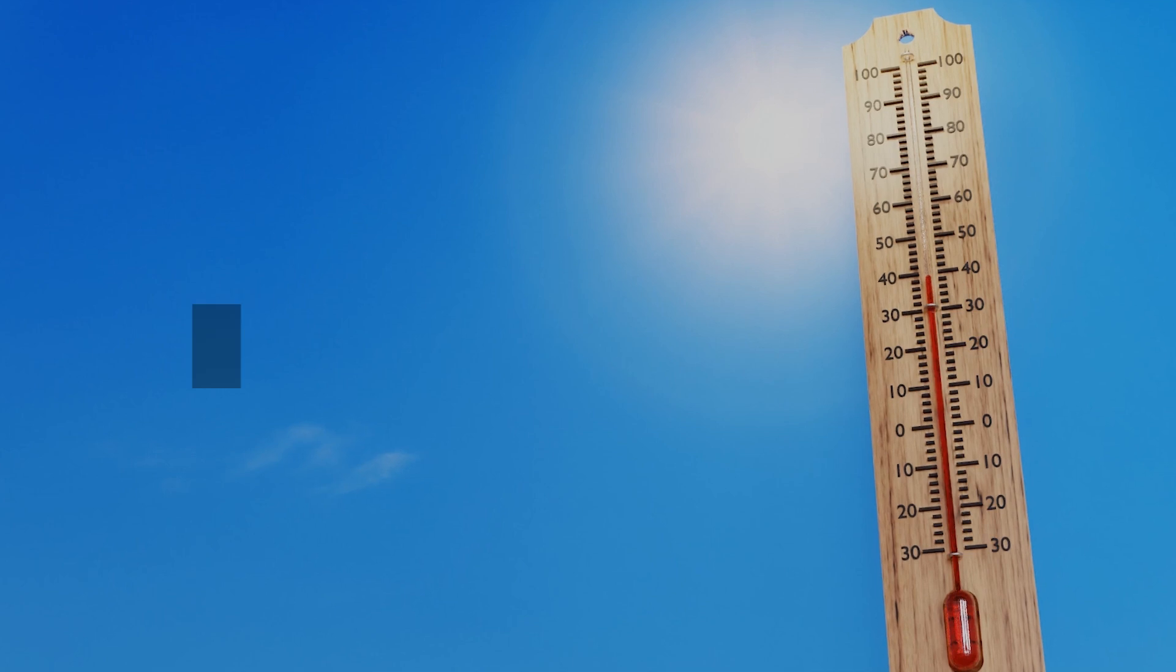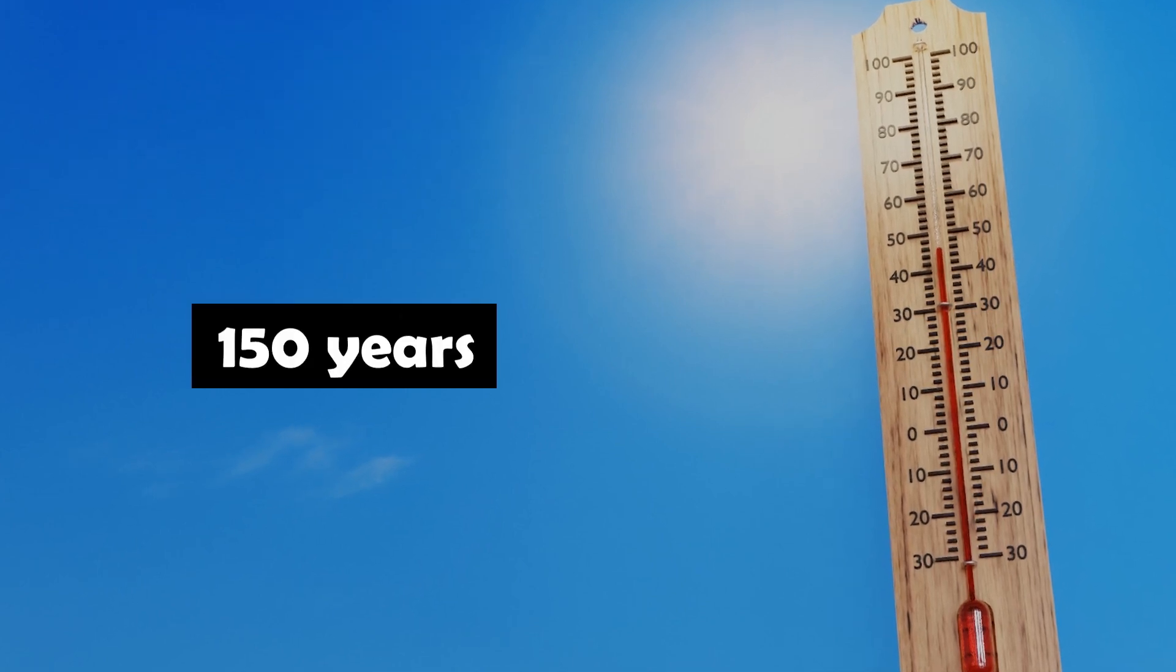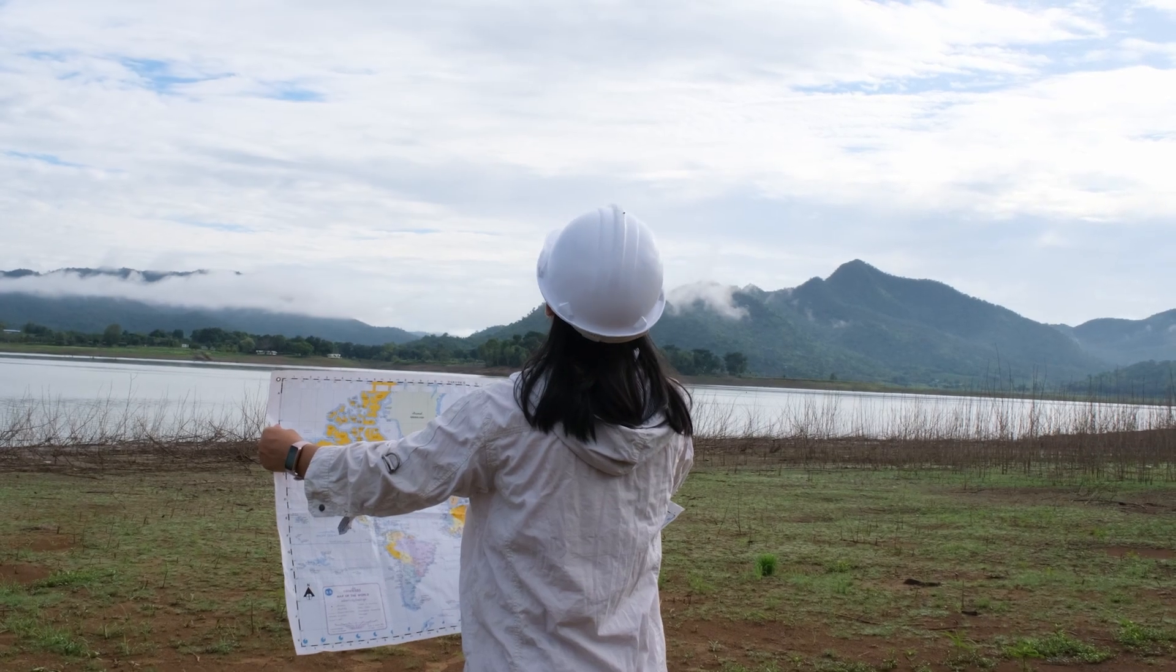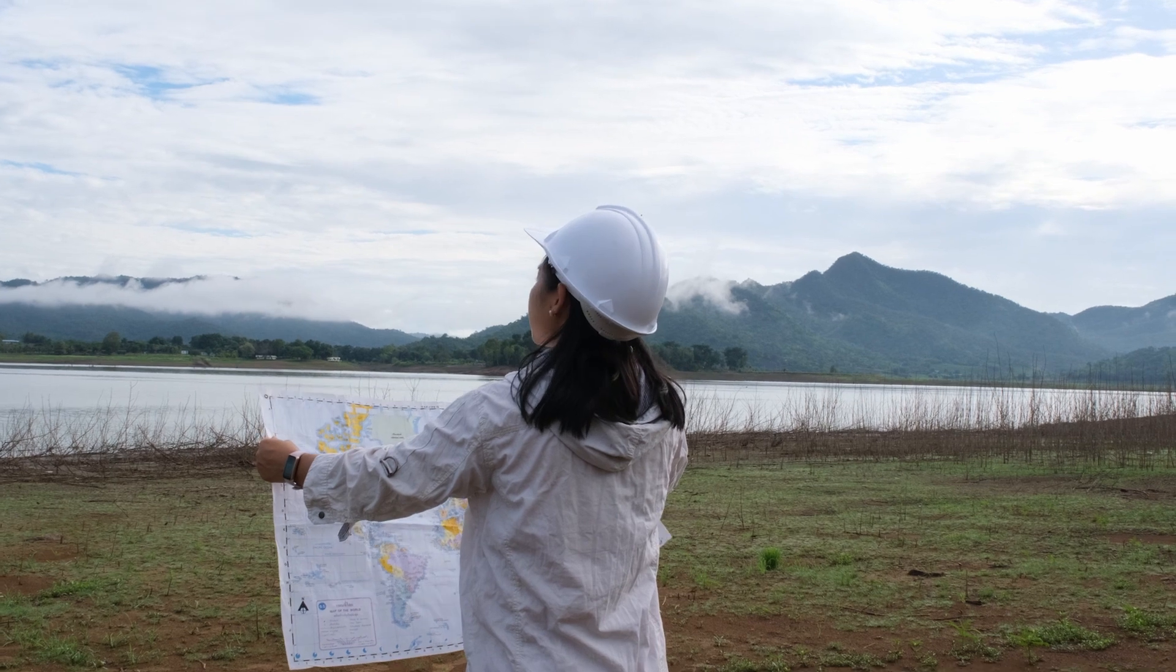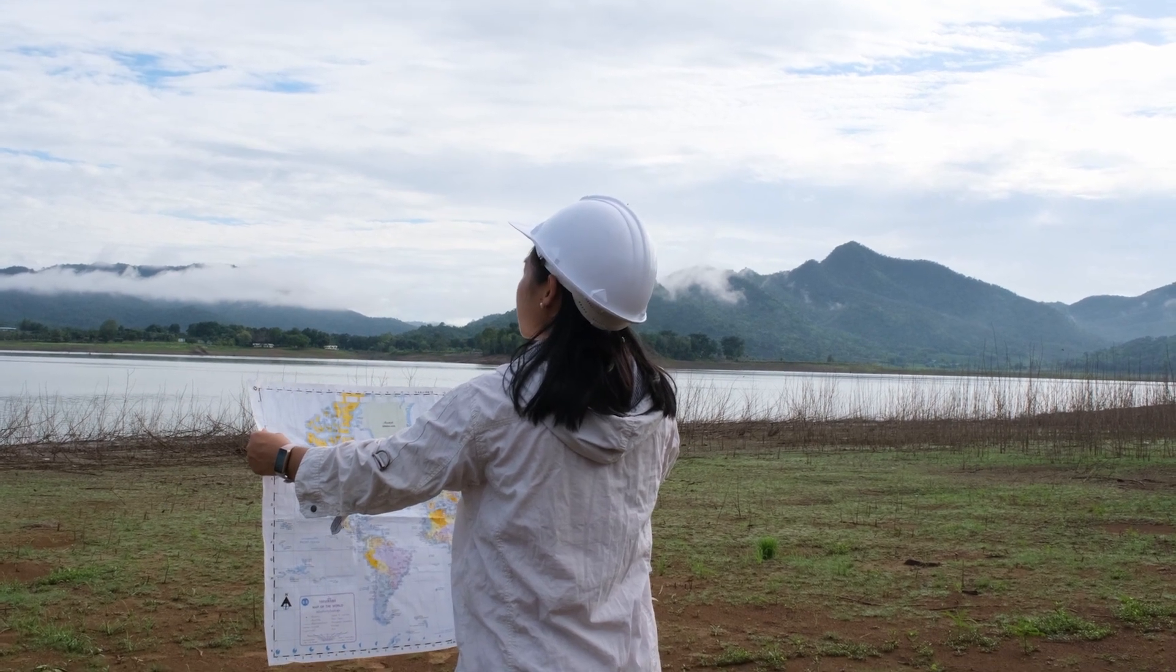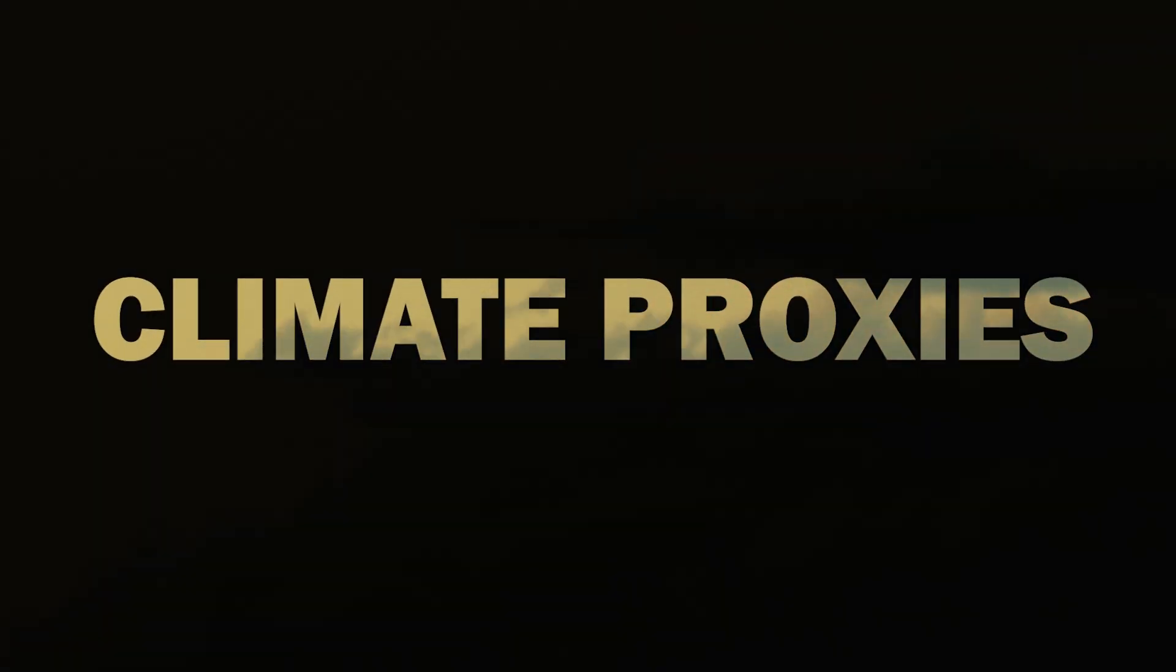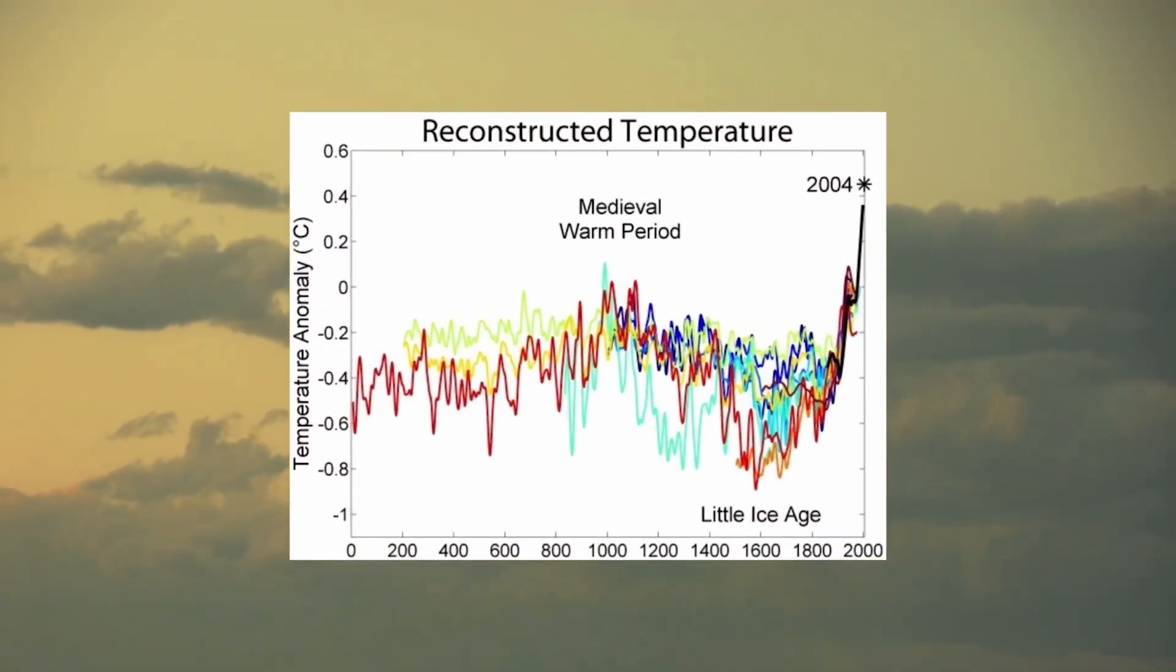Modern weather records only stretch back about 150 years, but how do researchers reconstruct ancient temperatures on Earth from millions of years ago? The answer lies in climate proxies, natural archives that provide clues to past climatic conditions.